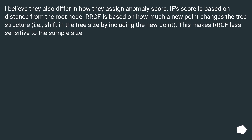They also differ in how they assign anomaly scores. If Isolation Forest's score is based on distance from the root node, RRCF is based on how much a new point changes the tree structure — i.e., the shift in tree size by including the new point. This makes RRCF less sensitive to the sample size.